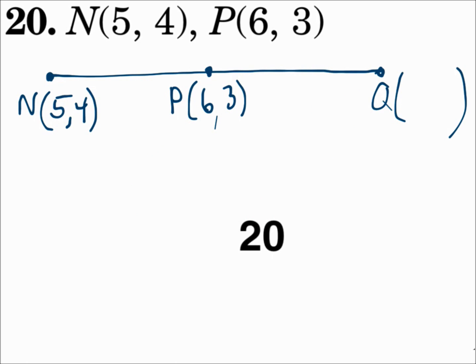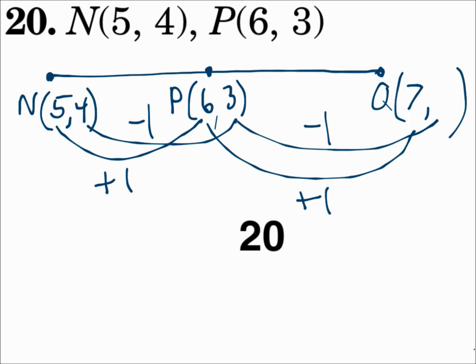On this question, N is one endpoint, P is the midpoint. How do you find the other endpoint? Well, look at the x's. From 5 to 6, you're adding 1. P is in the middle, which means it's the same distance on the other side. Add 1 again, and you get 7. For the y's, from 4 to 3, you're subtracting 1. Well, subtract 1 again to get 2. So, (7, 2) is the other endpoint.